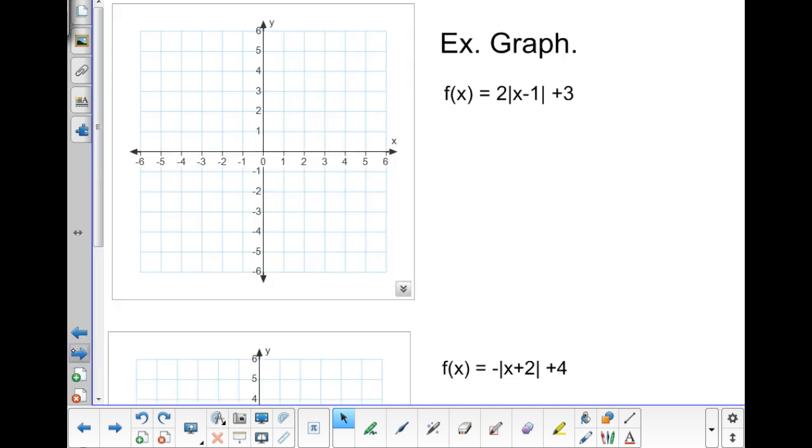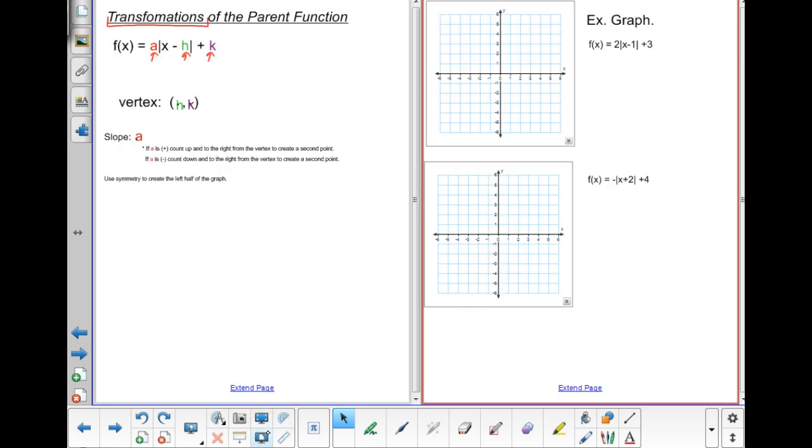Let's take a look at a couple of examples here. I have on the board, f of x equals 2 times the absolute value of x minus 1 plus 3. I want to graph him out. Okay, now, just so that we can see what was going on here, let me split the screen here.